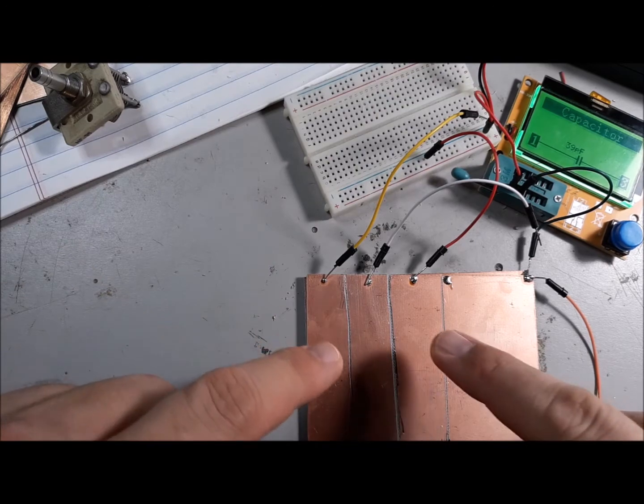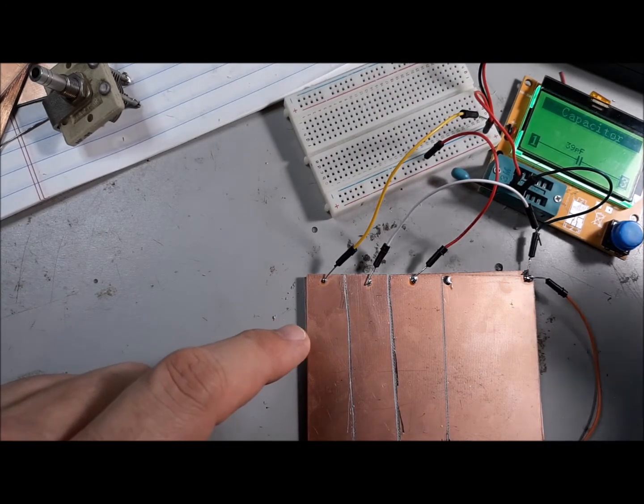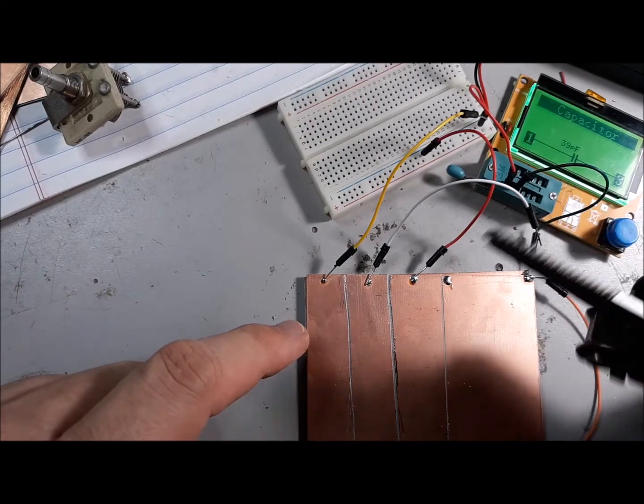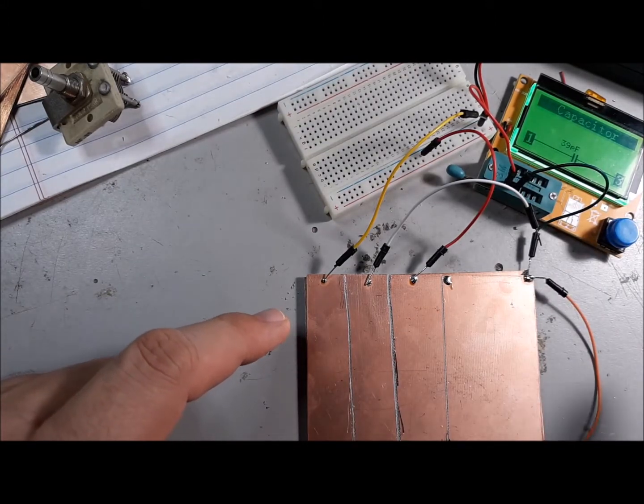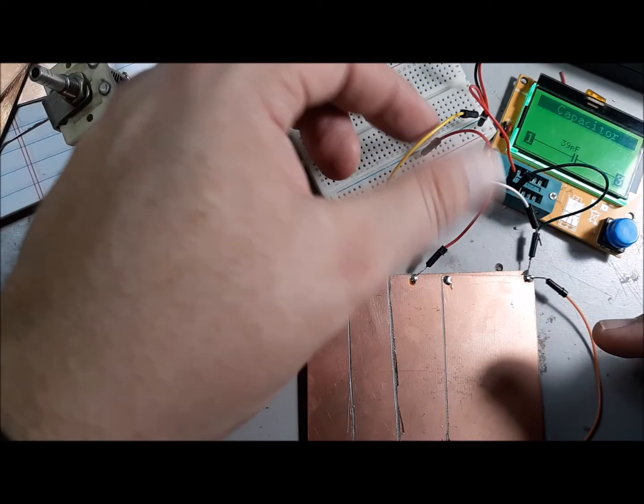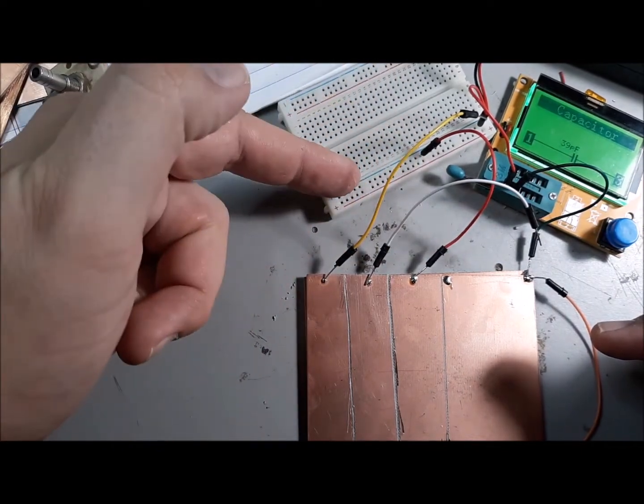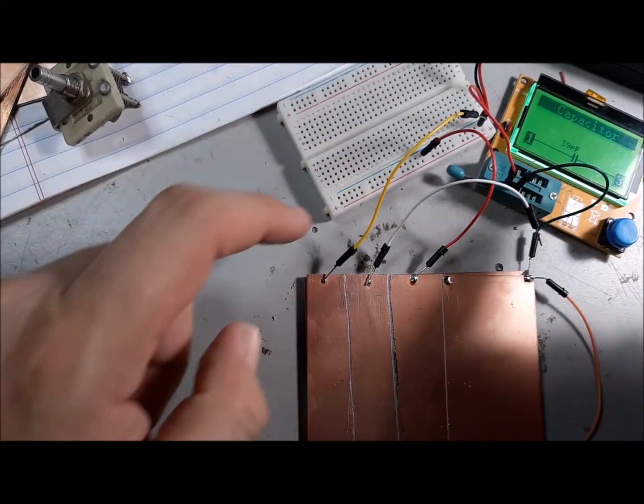So what I've done is I've scored this PCB with the saw on my Gerber tool—not very elegant but it worked—and I'm switching it out by simply adding it to this line on the breadboard here, which is connected to my tester.